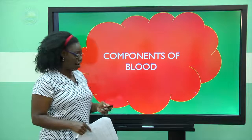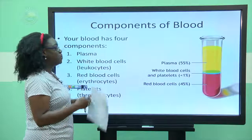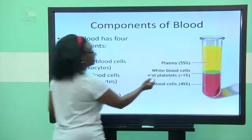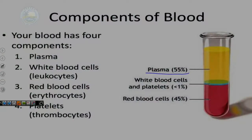Our blood is not really red. Our blood is actually made up mainly of this substance here called plasma. Plasma is a pale yellowish liquid that contains all the dissolved substances that are in the blood. So your components of blood: you have plasma, which makes up most of your blood. Then you have white blood cells, also known as leukocytes. You have red blood cells, also known as erythrocytes. And you have platelets, also known as thrombocytes.